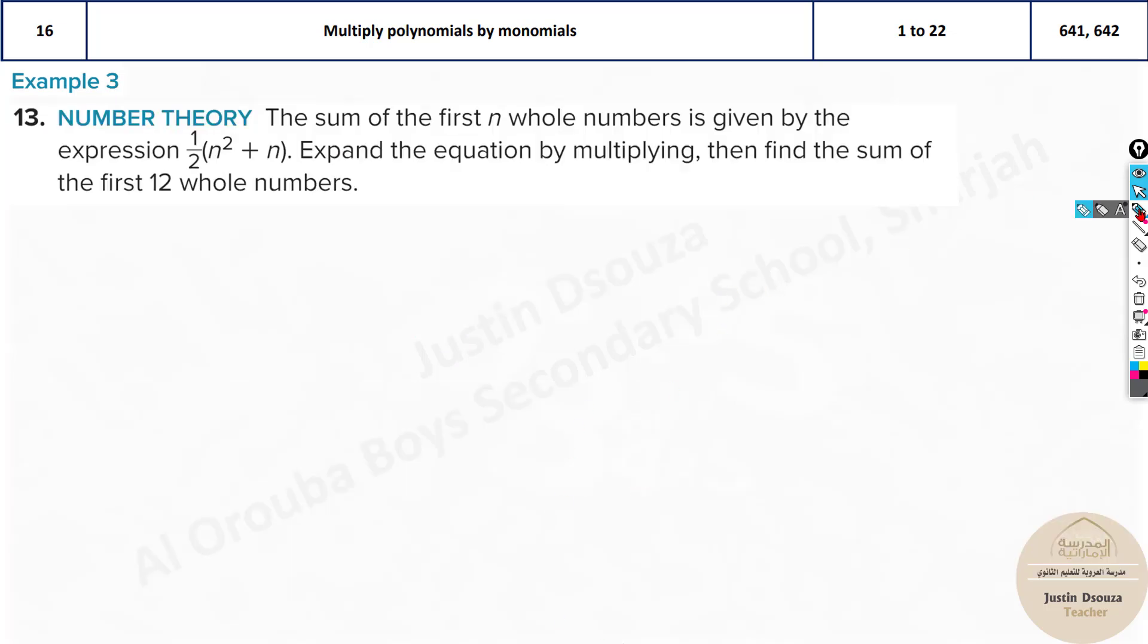Now we go to the real world problem. The sum of the first N whole numbers is given by the expression half N square plus N. Expand the equation by multiplying them, and then find the sum of the first 12 whole numbers. So the given expression is half N square plus N. Expand it by multiplying this inside, that's distributive property. It will be N square over 2 plus half N.